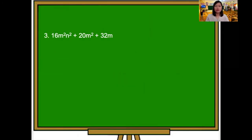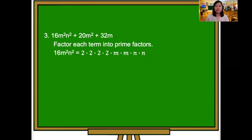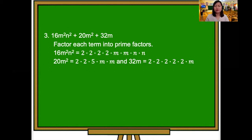Number 3: factor 16m squared n squared plus 20m squared plus 32m. Factor each term into prime factors. For the first term, 16m squared n squared, we have 2 times 2 times 2 times 2 times m times m times n squared. The second term, 20m squared, we have 2 times 2 times 5 times m times m. And the last term, 32m, we have 2 times 2 times 2 times 2 times 2 times m. The greatest common factor of the three terms is 4m.